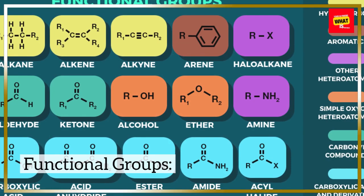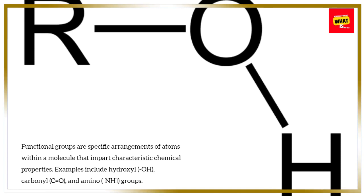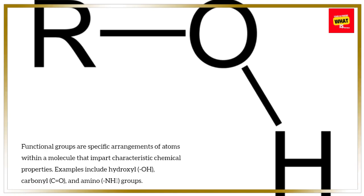Functional Groups. Functional groups are specific arrangements of atoms within a molecule that impart characteristic chemical properties. Examples include hydroxyl (O), carbonyl (C=O), and amino (NH) groups.